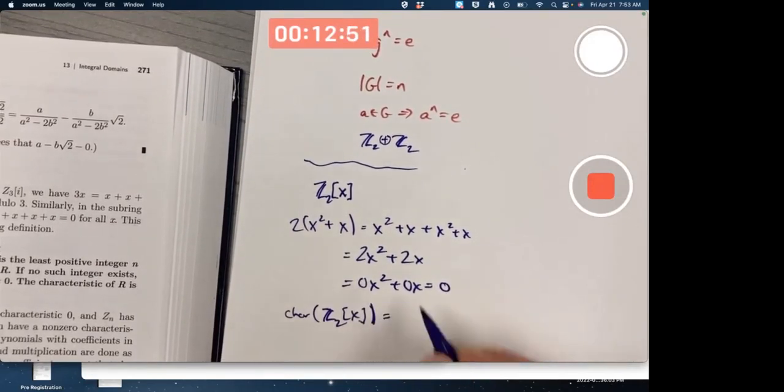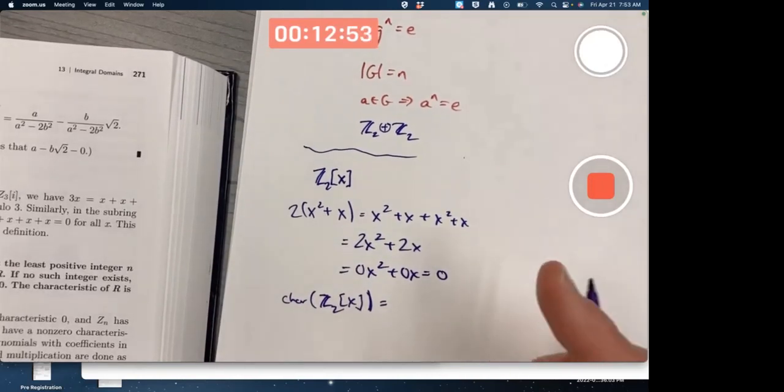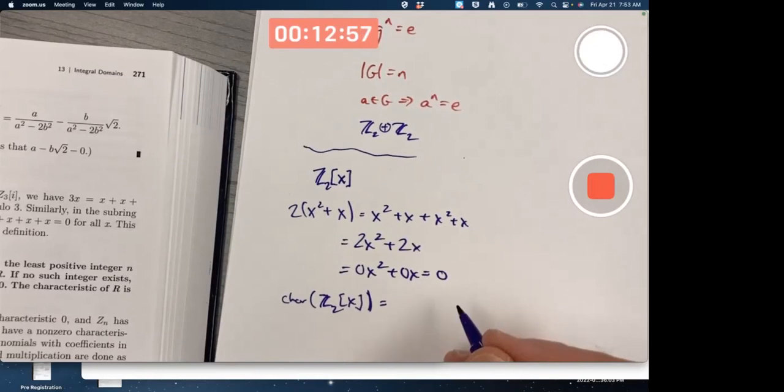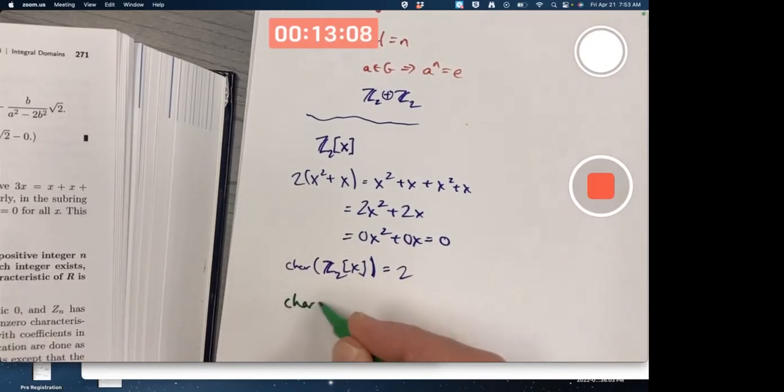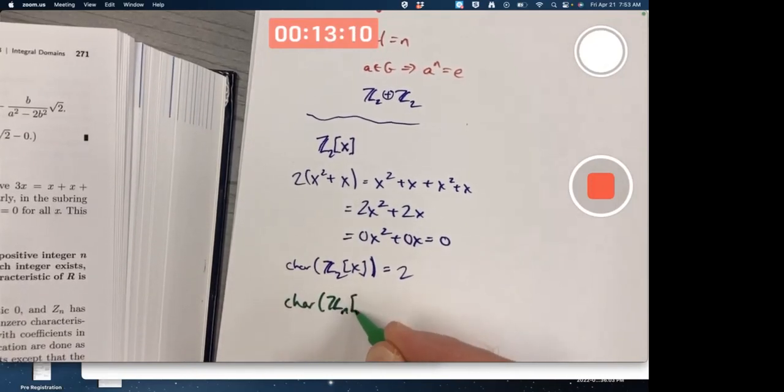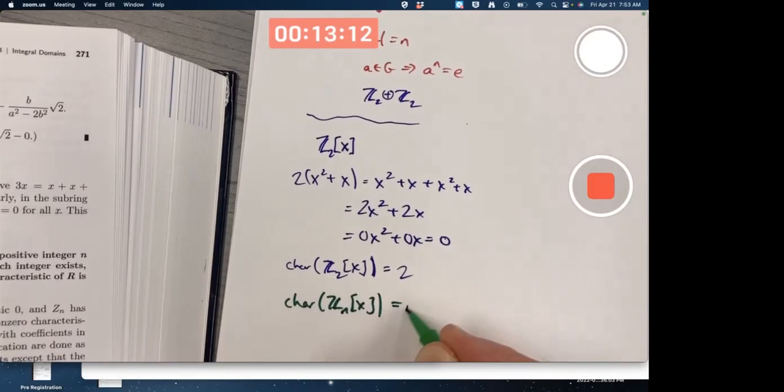And again, we could talk, we're only talking about the group structure here, just the addition. We could be talking about this purely in group theory if we wanted to. In general, the characteristic of Zn[x] is n.